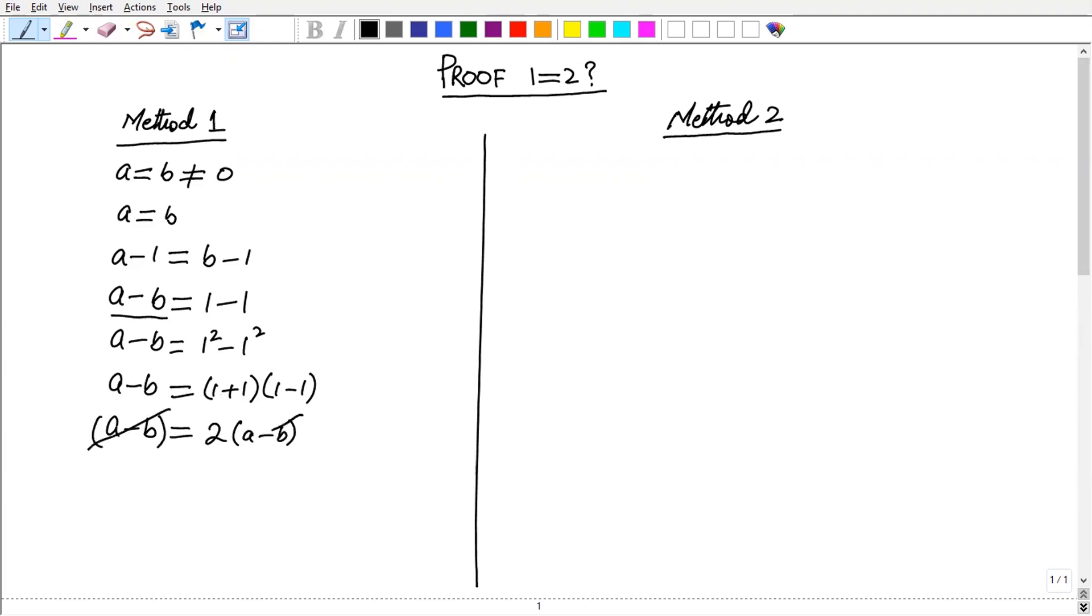So we can cancel A minus B with A minus B. At the left hand side we have 1, and to the right hand side we have 2. So this gives you 1 equals 2.